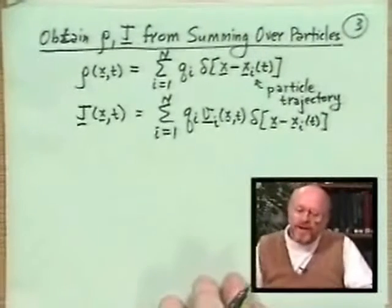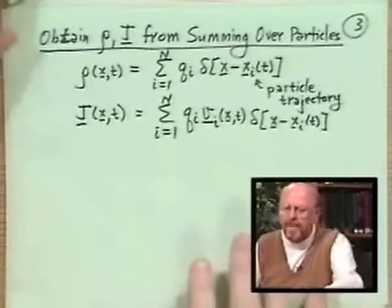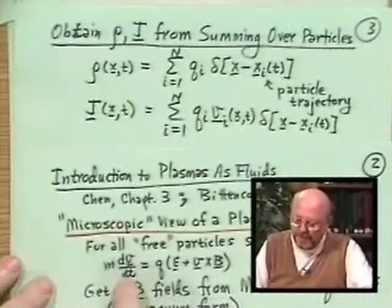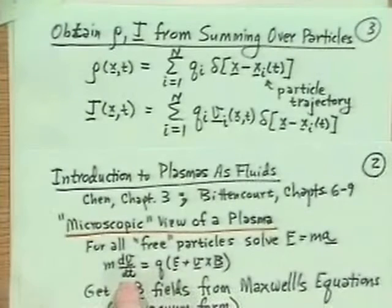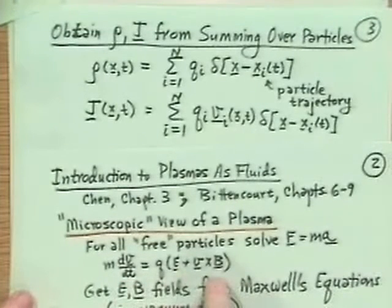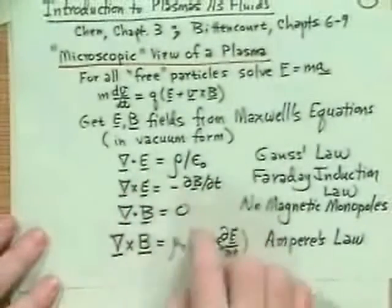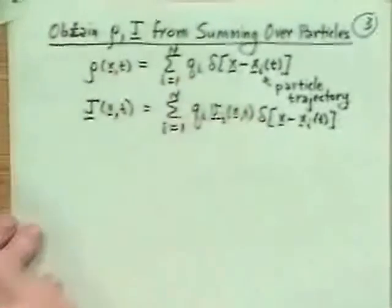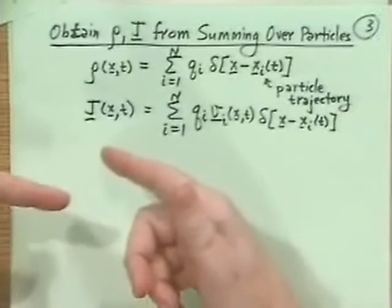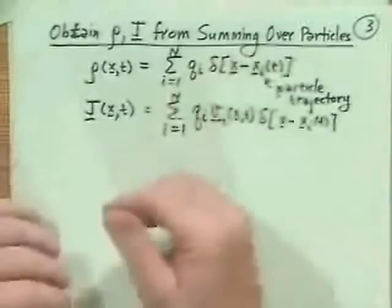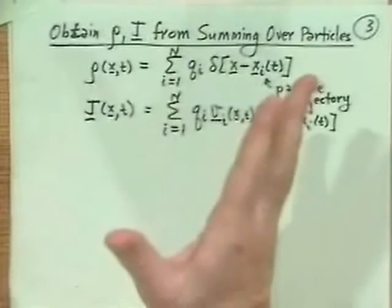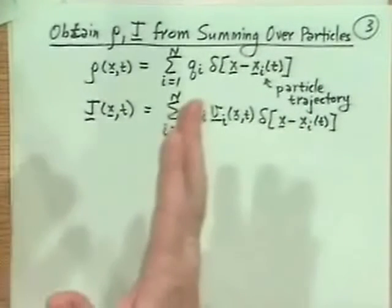In principle we have a closed system: F = ma gives us particle positions; those give ρ and J; Maxwell's equations give E and B; those go back into F = ma. This is obviously a self-consistent process and is actually how you proceed in kinetic theory — the most general way.